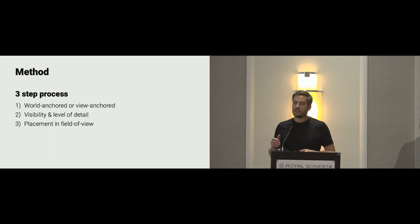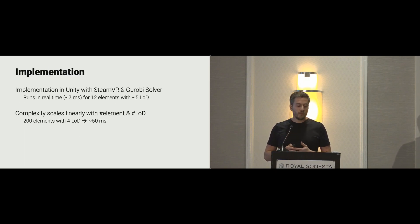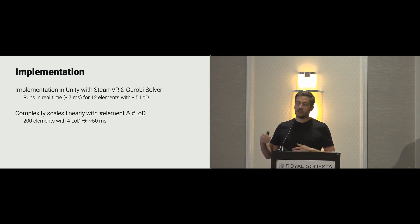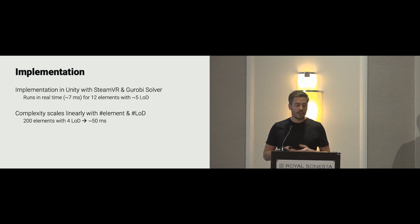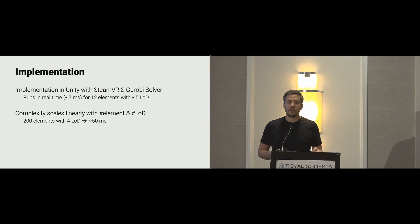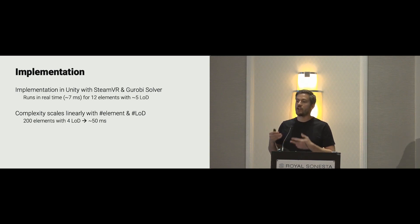This is our three-step process to automatically decide when, where, and how to display virtual elements. In terms of implementation, we implemented our prototype in Unity with SteamVR, using the Gurobi solver for the integer program. This runs in real time at roughly seven milliseconds for 12 elements with five levels of detail. The approach scales linearly with the number of elements and their levels of detail — for example, 200 applications with four levels of detail each takes roughly 40 milliseconds to solve. While this is not real time, this process should only happen when there is a meaningful change in context, such as task or cognitive load.